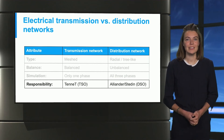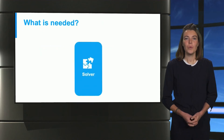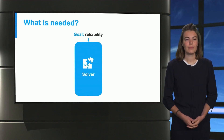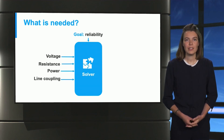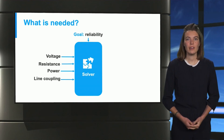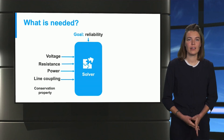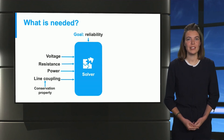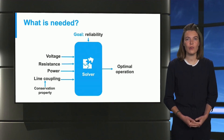So what do we need to simulate these networks? We need some kind of solver that can simulate distribution networks, transmission networks, and the coupled network. It is evident that the reliability of the network is the goal of the simulation. Different properties of the network are used as input to the solver, such as the voltage, the resistance of power lines, the generated power, and coupling of the different lines. Note that in all nodes at each instant, the energy conservation property should be satisfied. In the end, we want to have an optimal operation of the different networks.